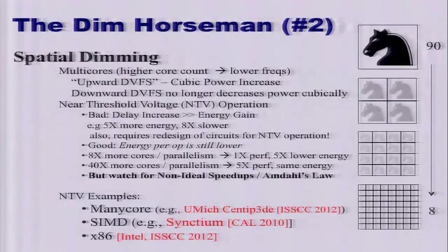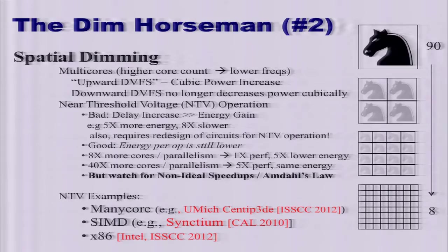DVFS is dynamic voltage and frequency scaling — originally you could reduce the voltage and get a cubic power savings with only a linear decrease in frequency. In the good scenario of near-threshold voltage operation, say I lower the voltage and get an 8x decrease in serial performance but save 5x energy. I could then use eight times as many cores to get the performance back — using 8x more area while getting 5x lower energy. Or I could use way more cores to get 5x the performance with the same energy, but using 40x as much area. The challenge is that parallelizing across so many cores introduces non-ideal speedups and additional communication overhead.